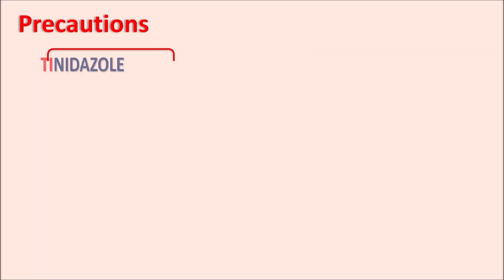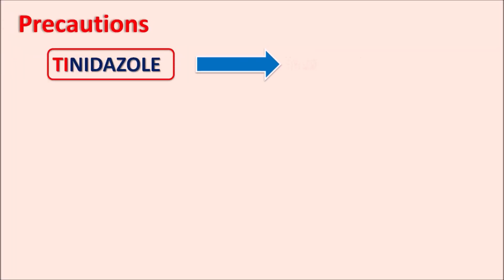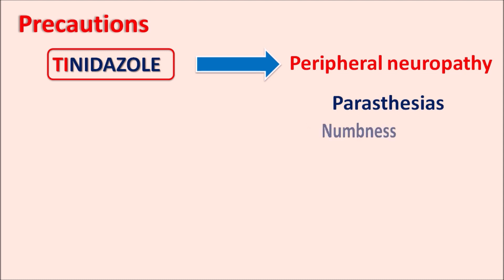An important precaution is that tinidazole can precipitate peripheral neuropathy. Symptoms to watch for include paresthesia, loss of sensation, numbness, and decreased sensation. If any of these symptoms are observed, care should be taken to avoid development of peripheral neuropathy. Patients who already have diabetic or other types of neuropathy may experience worsened paresthesias with this drug.